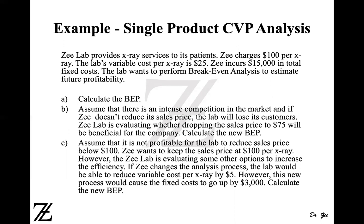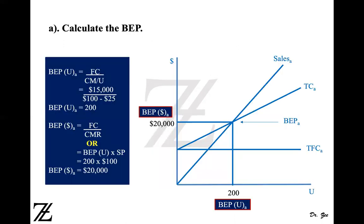So let's start with option number one — calculate the break-even point with the given information. Fixed cost was provided as $15,000. Contribution margin per unit is your selling price minus variable cost per unit. So $100 minus $25 gives $75. So $15,000 over $75 equals 200. That's the break-even point in units.